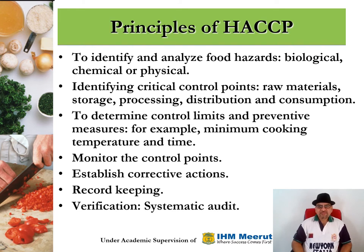The principles of HACCP are: one, to identify and analyze food hazards — biological, chemical, or physical; two, identifying critical control points — raw materials, storage, processing, distribution, and consumption; three, to determine control limits and preventive measures, for example minimum cooking temperature and time; four, monitor the control points; five, establish corrective actions; six, record keeping; and seven, verification — systematic audit.